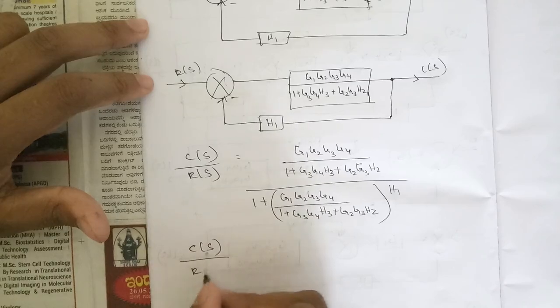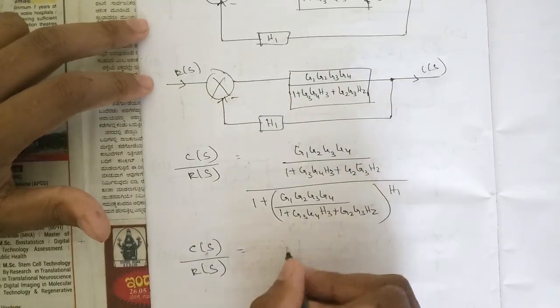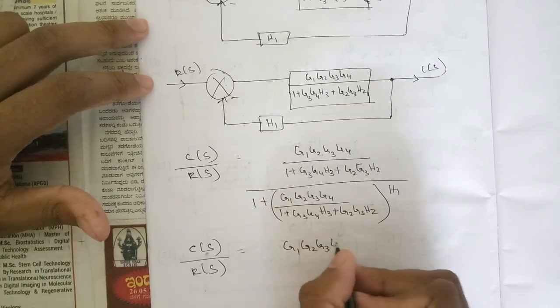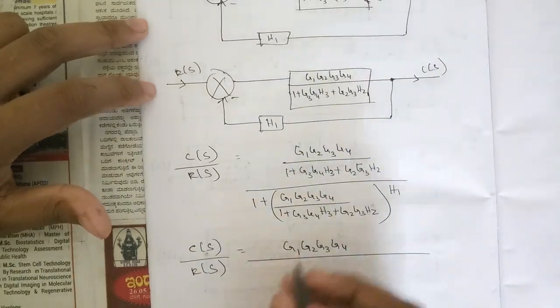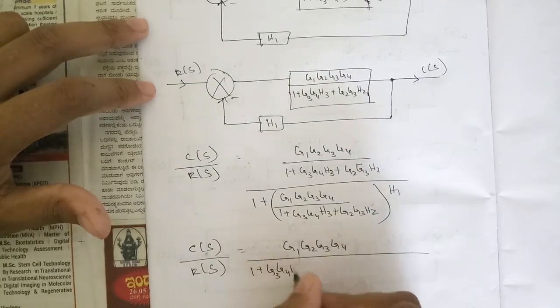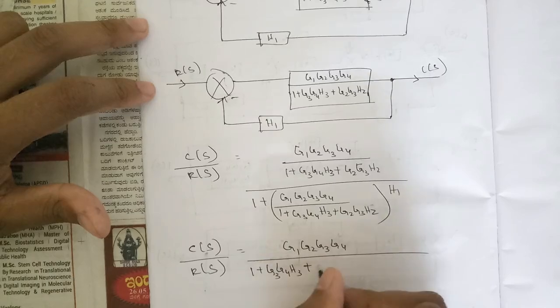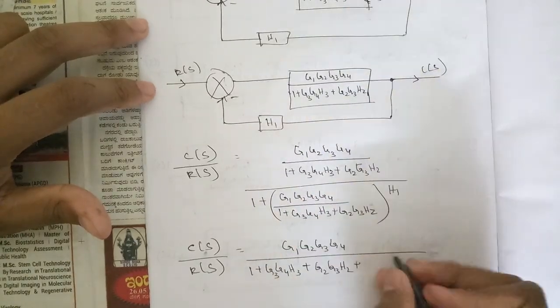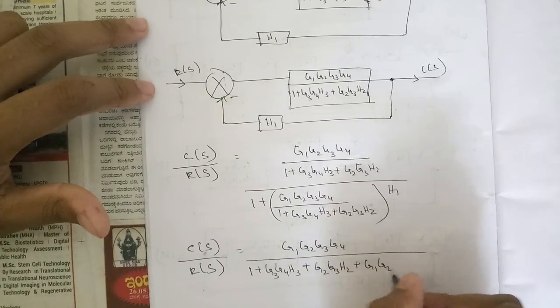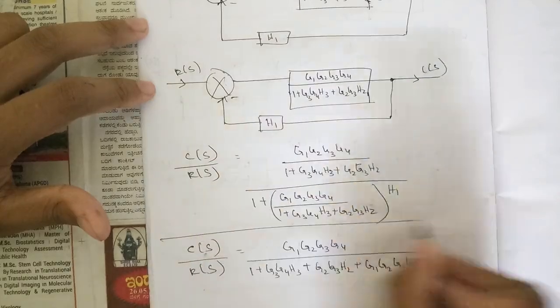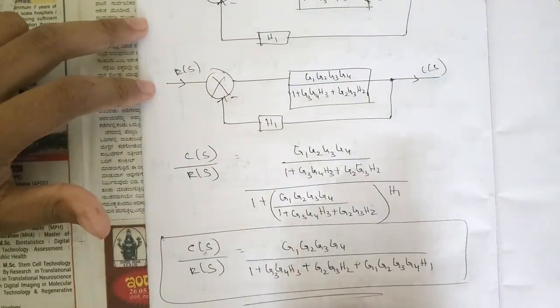After cancellation, our simplified transfer function which we are getting is G1, G2, G3, G4 whole divided by, multiply this, what we will be getting: one plus G3, G4, H3 plus G2, G3, H2 plus G1, G2, G3, G4, H1. So this is your final answer. So this is your final transfer function for this problem.